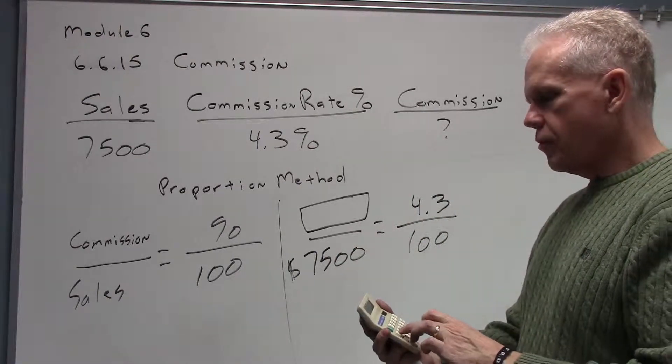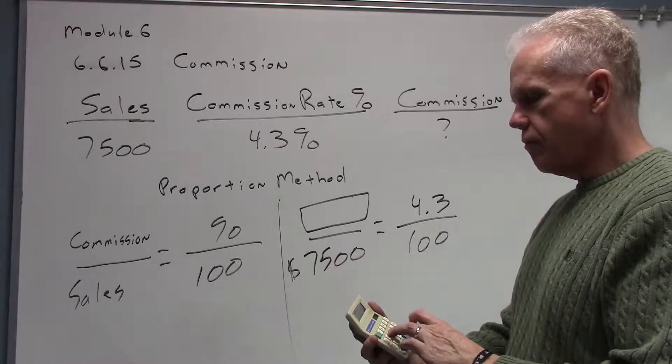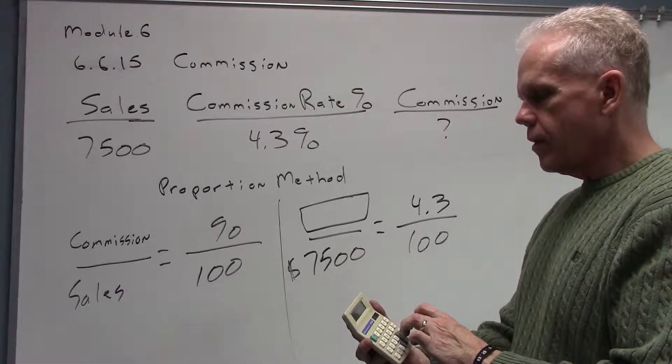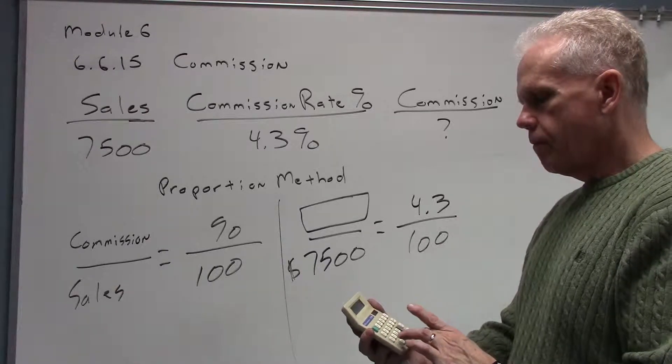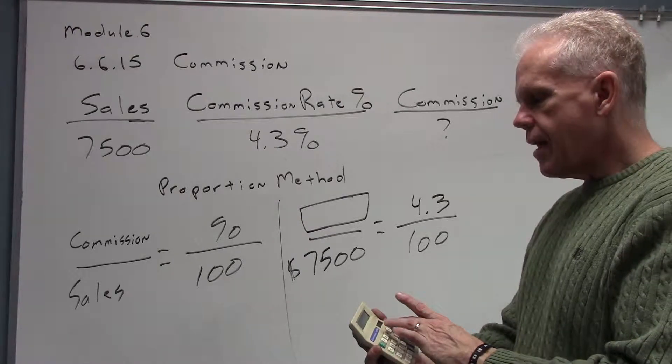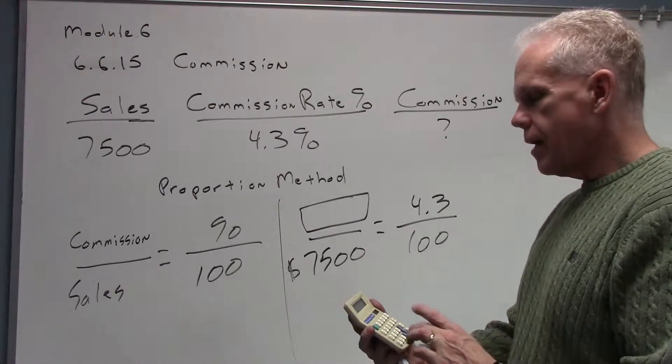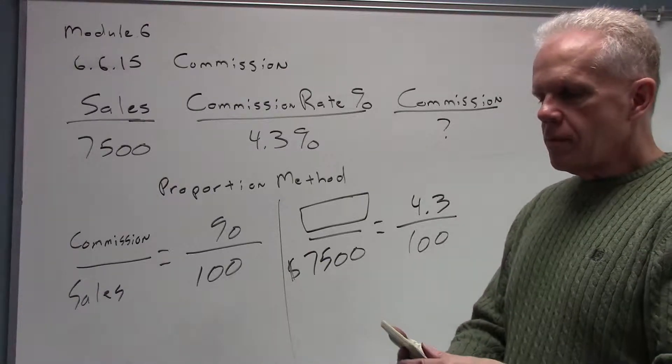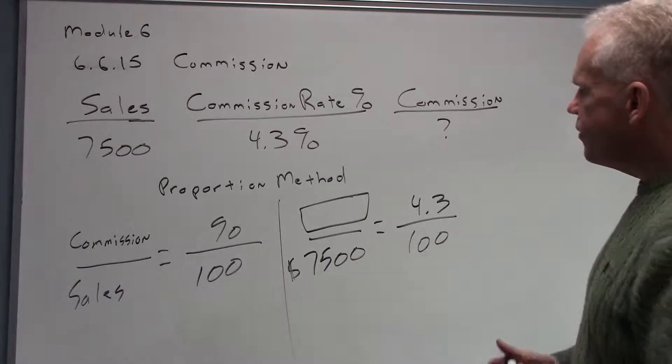I will cross multiply 7500, and I'm going to multiply that times 4.3. Hit my equals button. Then I'm going to come right behind that and divide that answer by 100. Okay, so what I'm getting is 322.5.